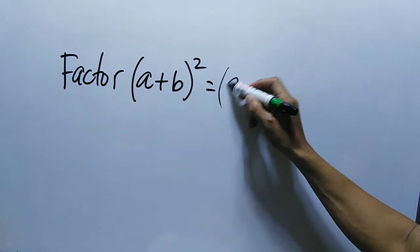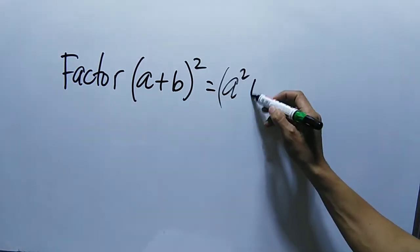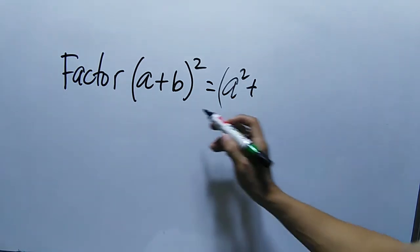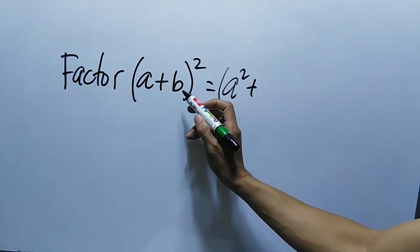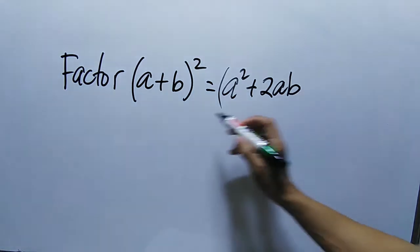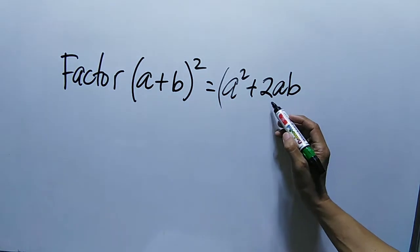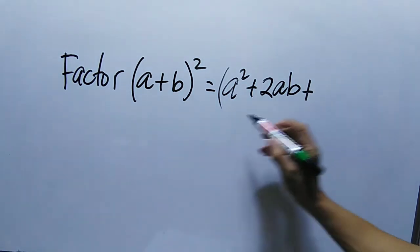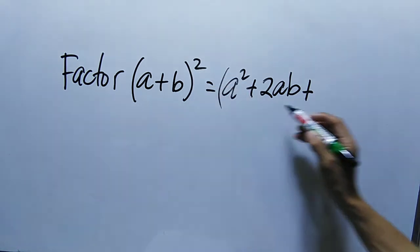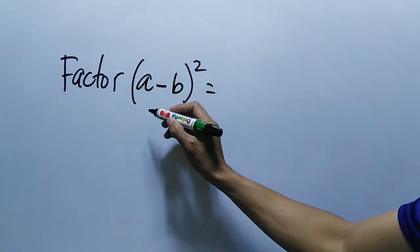We square a, so that becomes a squared. Since it is positive, we write positive. Then we take twice the product of the first term and the second term — a multiplied by b, then twice that. Then we square the second term b, so this is b squared.